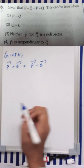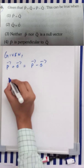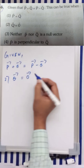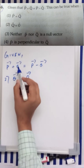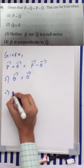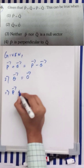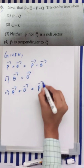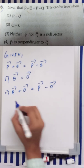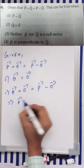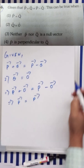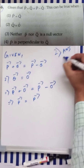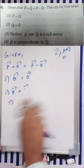The second option is q vector is a null vector. If we place the value of q as null vector, it would be p vector plus null vector equals p vector minus null vector, and this is obviously true. So your second option will be your answer. But we'll talk about the third and fourth options as well.